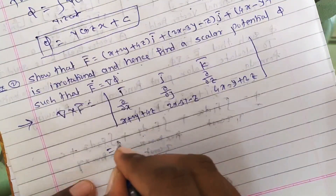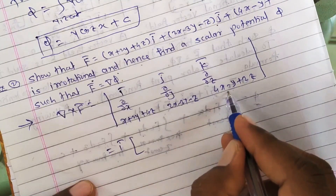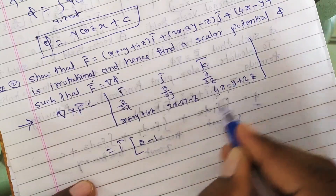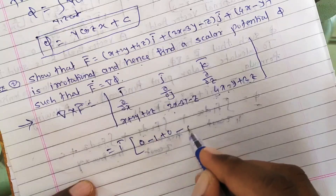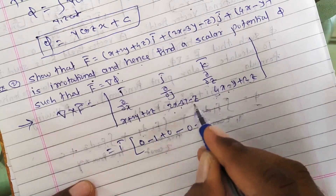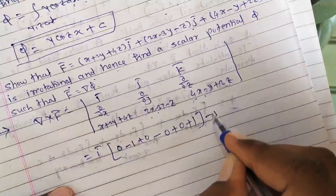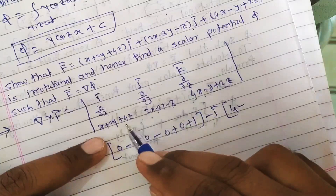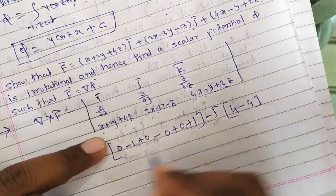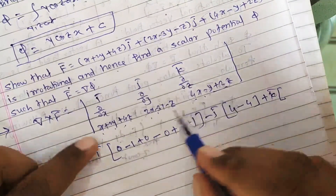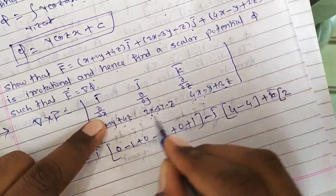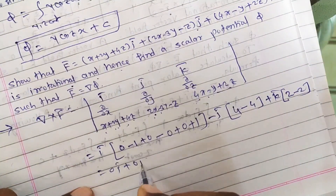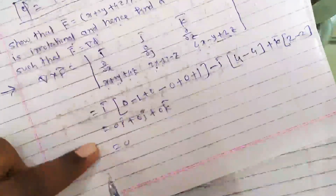Expanding the determinant: î component — ∂/∂y(4x−y+2z) = −1, and ∂/∂z(2x−3y−z) = −1, so −1 − (−1) = 0. Minus ĵ component — ∂/∂x(4x−y+2z) = 4, and ∂/∂z(x+2y+4z) = 4, so 4 − 4 = 0. Plus k̂ component — ∂/∂x(2x−3y−z) = 2, and ∂/∂y(x+2y+4z) = 2, so 2 − 2 = 0. Result: 0î + 0ĵ + 0k̂ = 0̄.